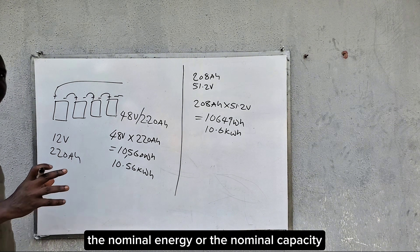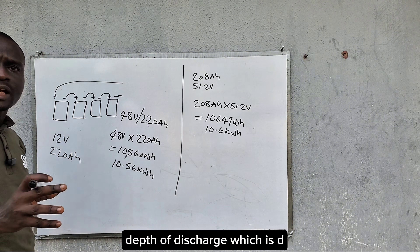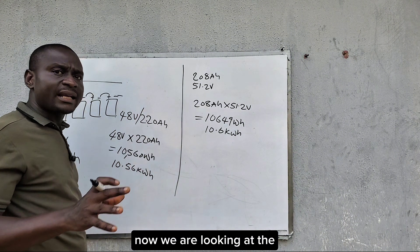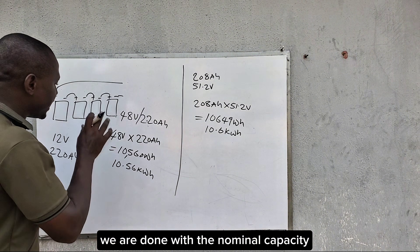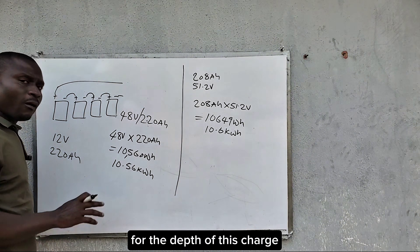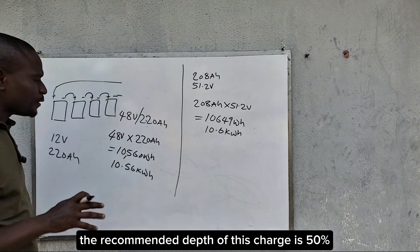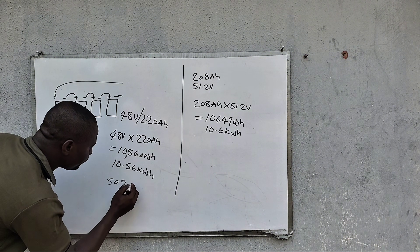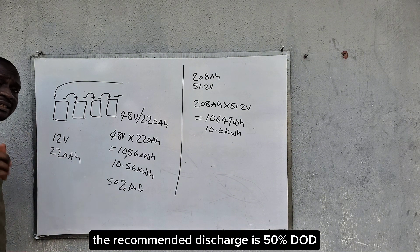We are looking at three things: the nominal capacity, the depth of discharge which is DoD, and the usable capacity. We are done with the nominal capacity — they are almost the same for both. Now for the depth of discharge: for a lead acid battery bank, the recommended depth of discharge is 50%.